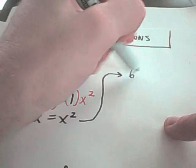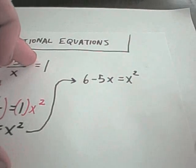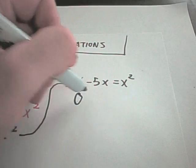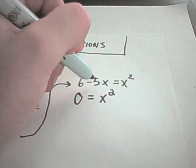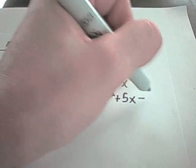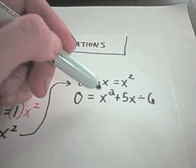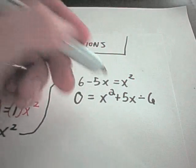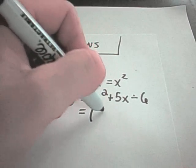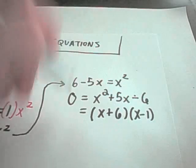So I've got 6 minus 5x equals x squared. With quadratic equations, the easiest way is to set one side equal to 0. I'll make the left side 0. I'll add the 5x and subtract the 6, then try to factor. It looks like it factors as x plus 6 and x minus 1.